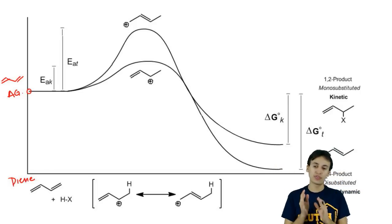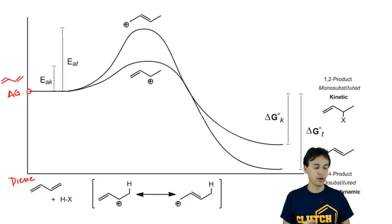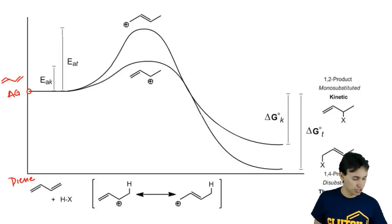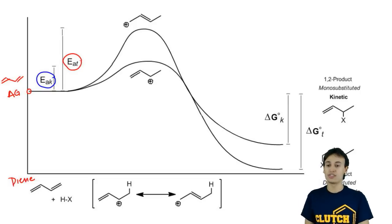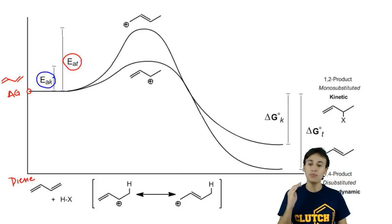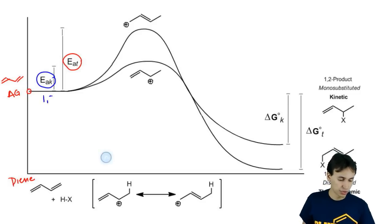Notice that there's two different pathways that we can take from the get-go. We notice that I have these two activation energies. I have an activation energy that's called activation energy K or kinetic and an activation energy that is thermodynamic. What we notice is that the intermediates that are created in these two different reactions actually have different energies. Because if you'll notice, remember kinetic means 1,2. Remember that thermodynamic means 1,4.